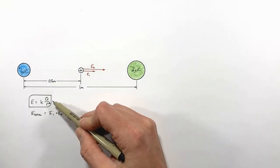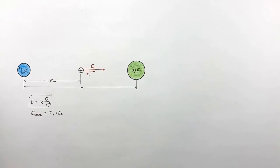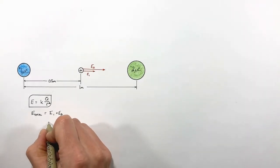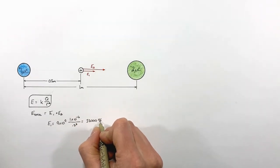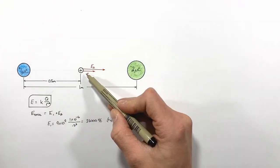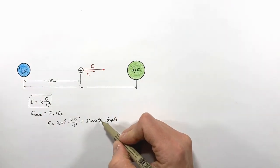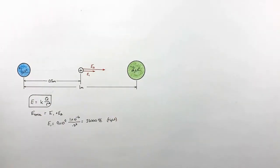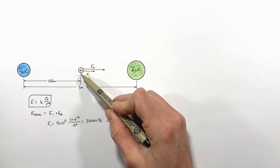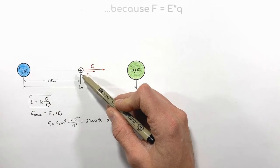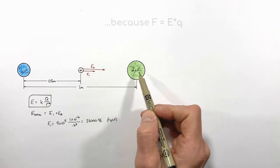Applying our equation for electric field first to the field produced by this positive one micro coulomb charge, we find the electric field at this point produced by this charge is 36,000 newtons per coulomb. That simply tells us that if we were to put a one coulomb test charge right here, there would be 36,000 newtons of force acting on it.